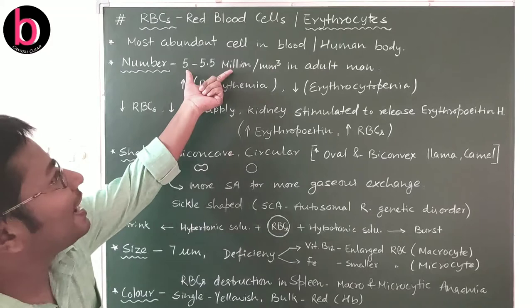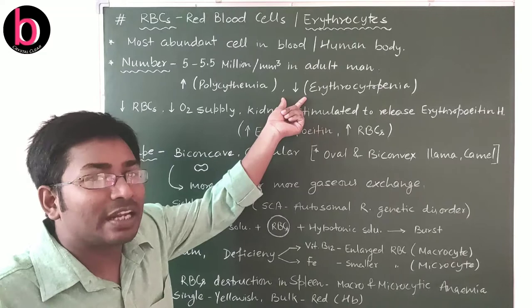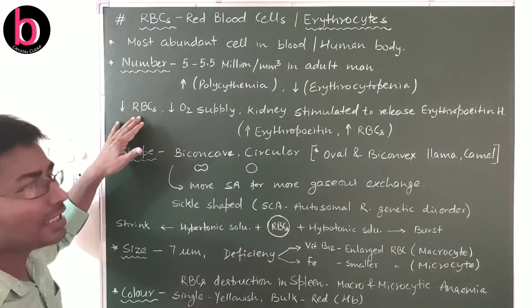Sometimes the number of RBCs increases above the normal count; this condition is known as polycythemia. Conversely, when the RBC count decreases below normal, this condition is known as erythrocytopenia.